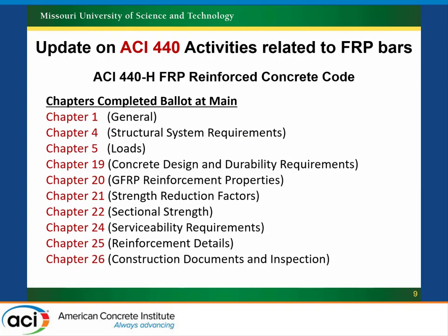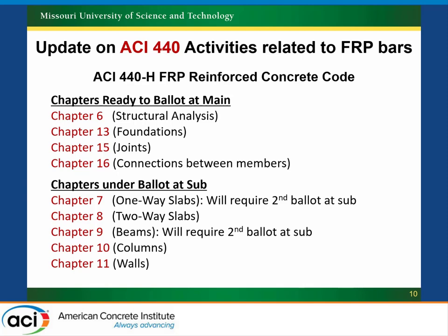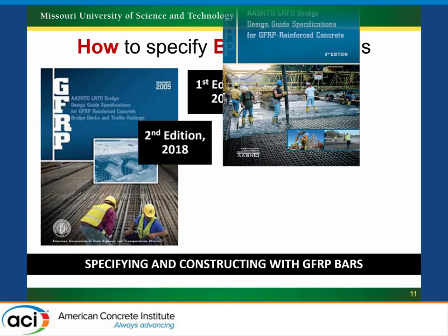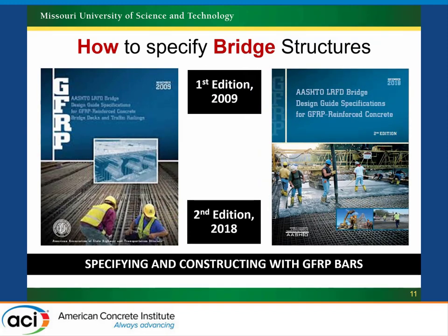The chapters for the revised version we hope will be published next year have already come through the main 440 committee, and some are ready to ballot. We have meetings this week looking at these various chapters. On the bridge side, standards have also been developed for bridge design — the first edition was in 2009, and in December of last year the 2018 second edition was published, providing guidance for departments of transportation to design using FRP in bridges.